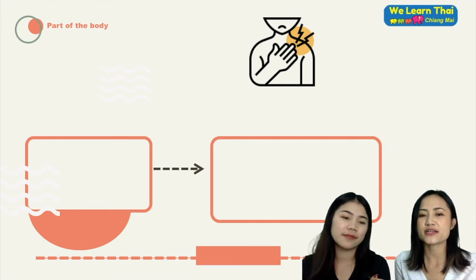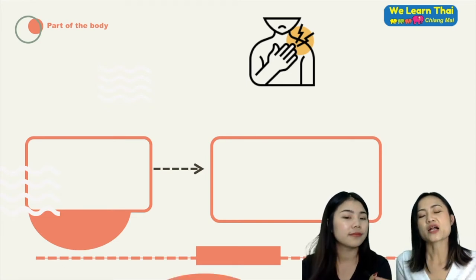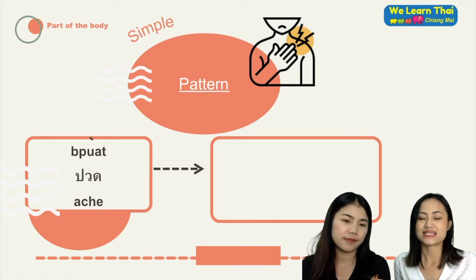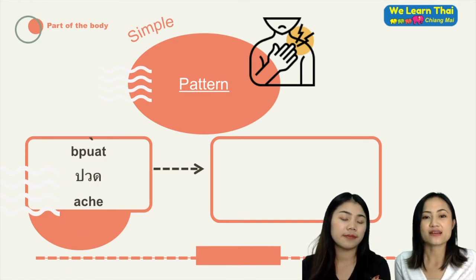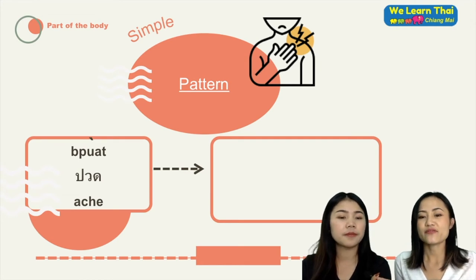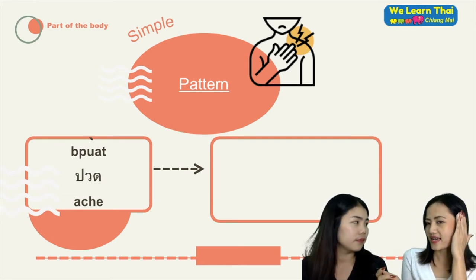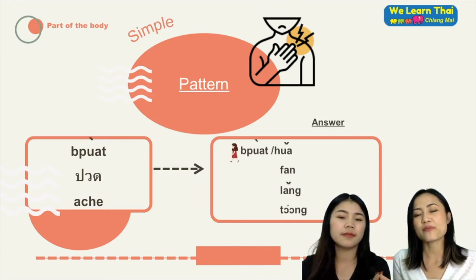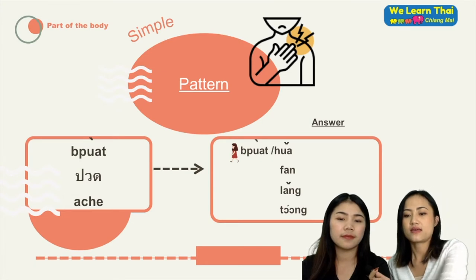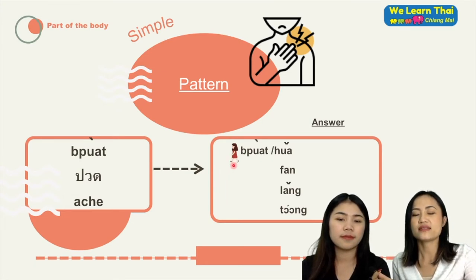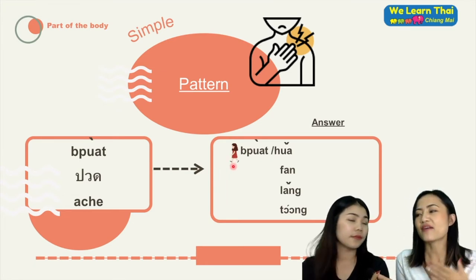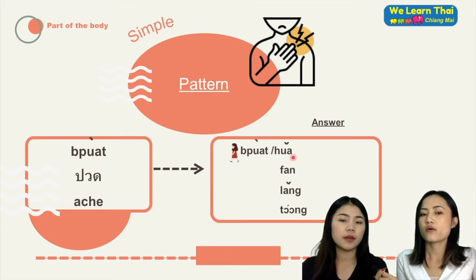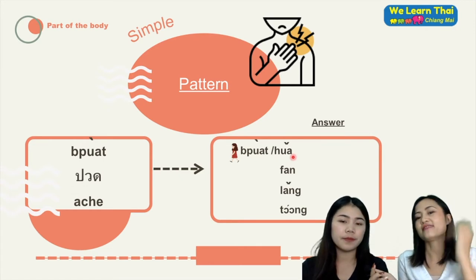Now we are going to learn how to talk about the symptoms that you have. We're going to start with the word ปวด, which means ache or pain. So if you want to say 'I have a headache,' you will use the word ปวด. For example, you say ดิฉันปวดหัว. Or you say ดิฉันปวดฟัน if you want to say 'I have a toothache.' The word ฟัน means teeth or tooth.